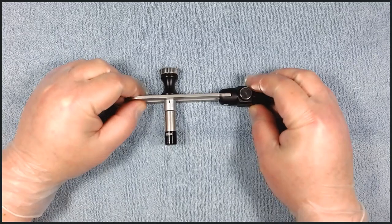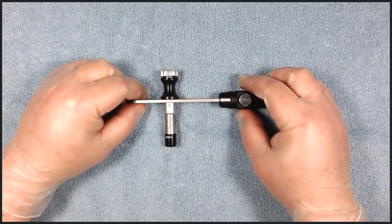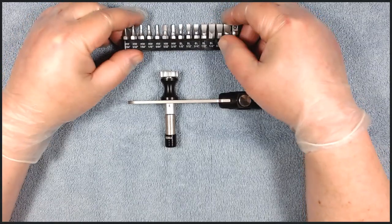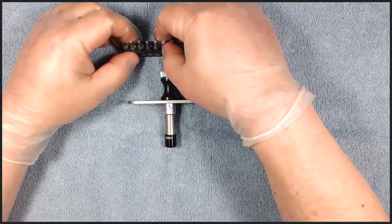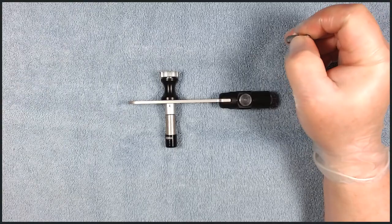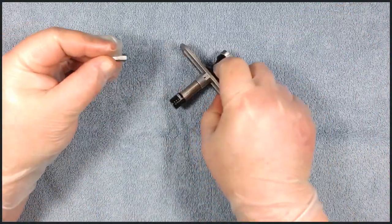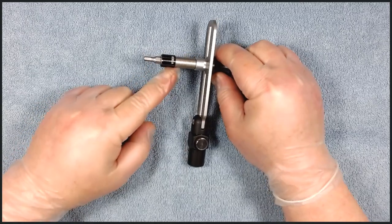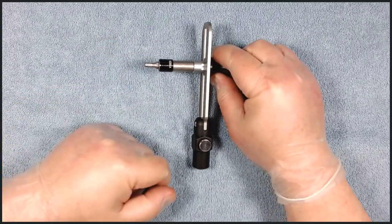Then, of course, we should not forget to mount screwdriver bit. For demonstration purposes, we will be using 5/32 inch hex bit. To mount it, just insert it in here and push it in. Now it's locked.